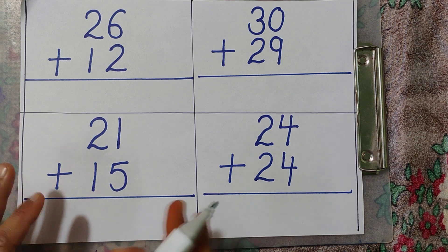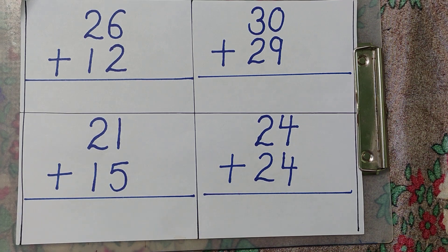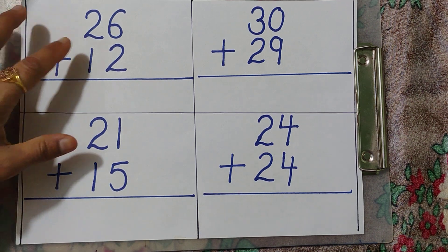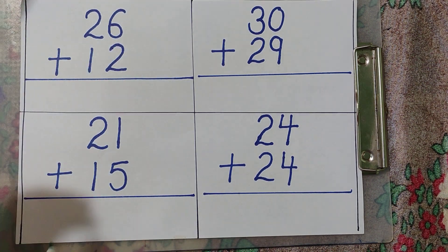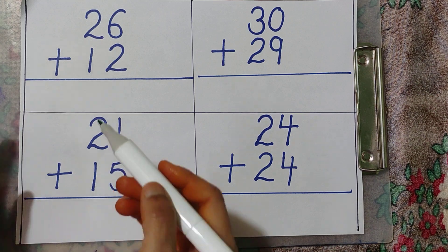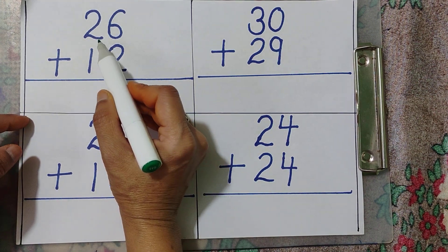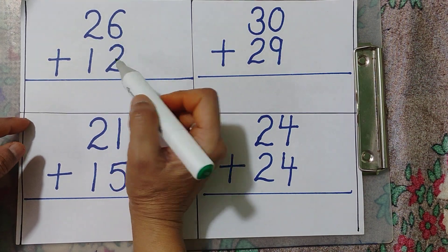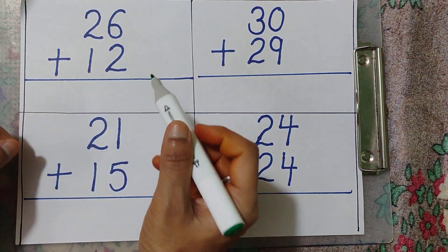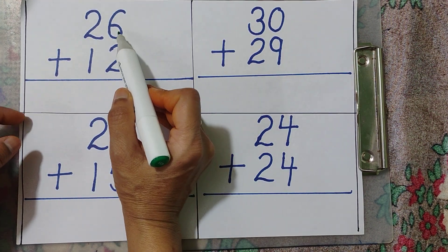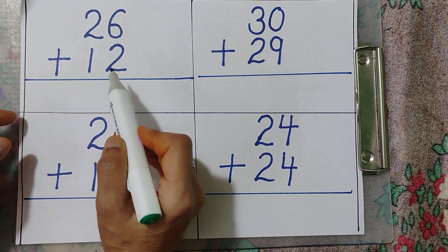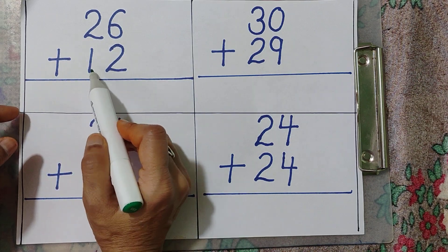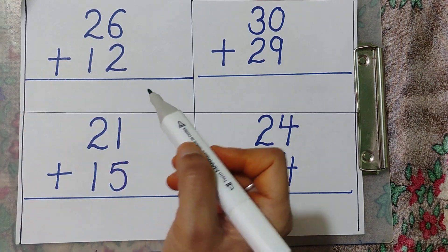Hello kids, I am teaching addition — two digits ka addition. We will look at the ones and tens columns.